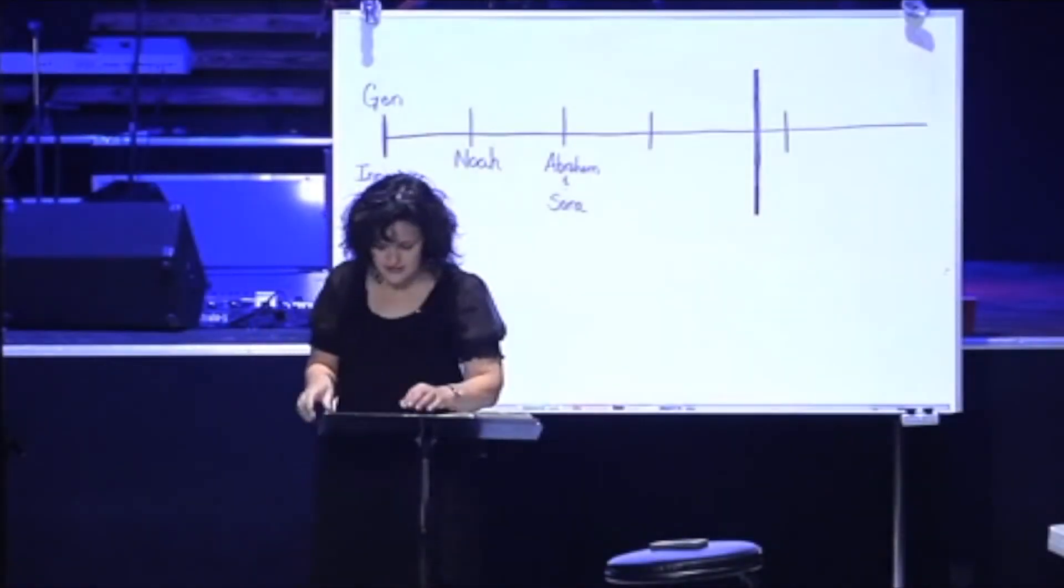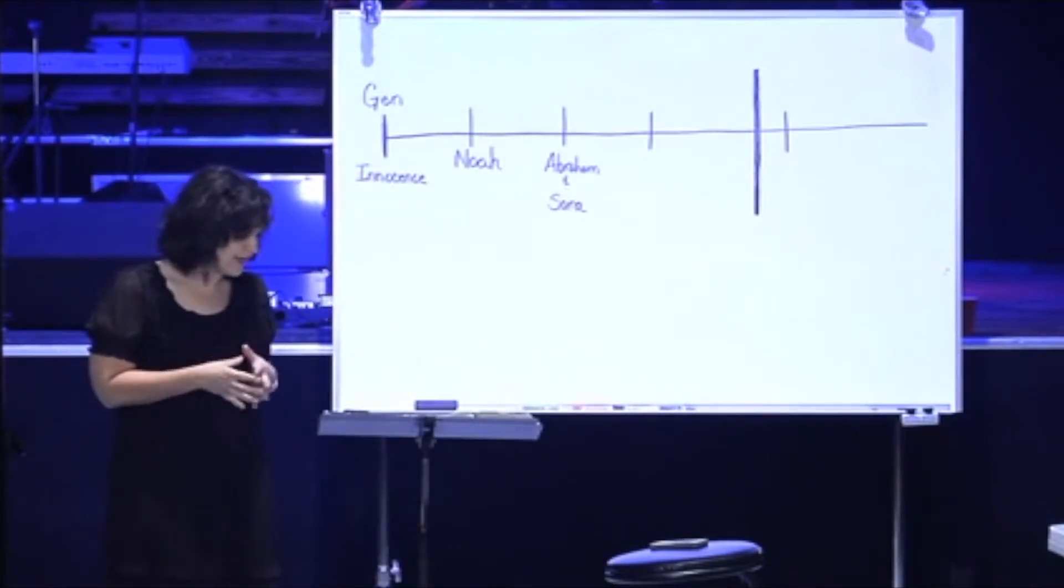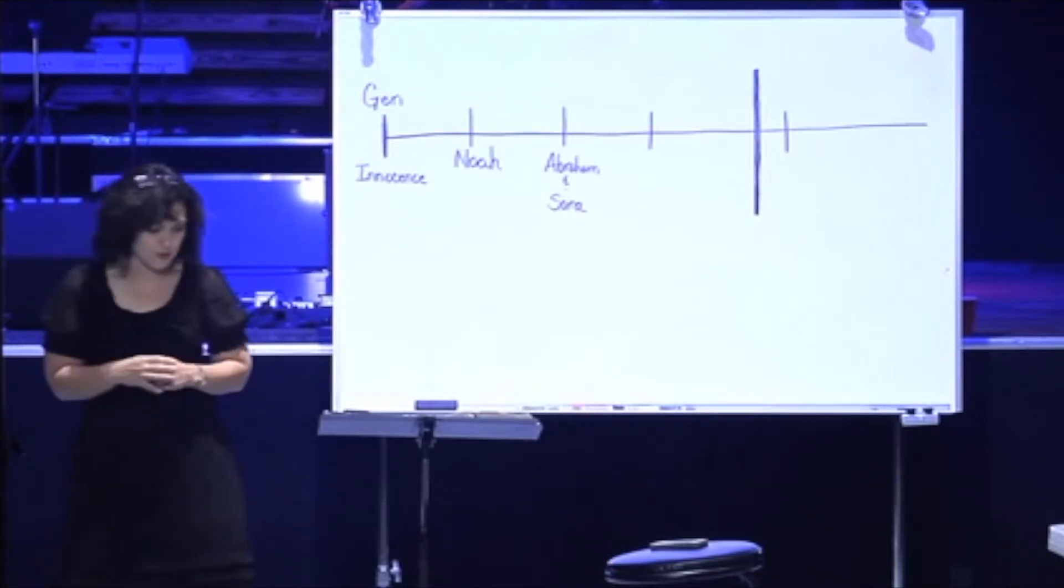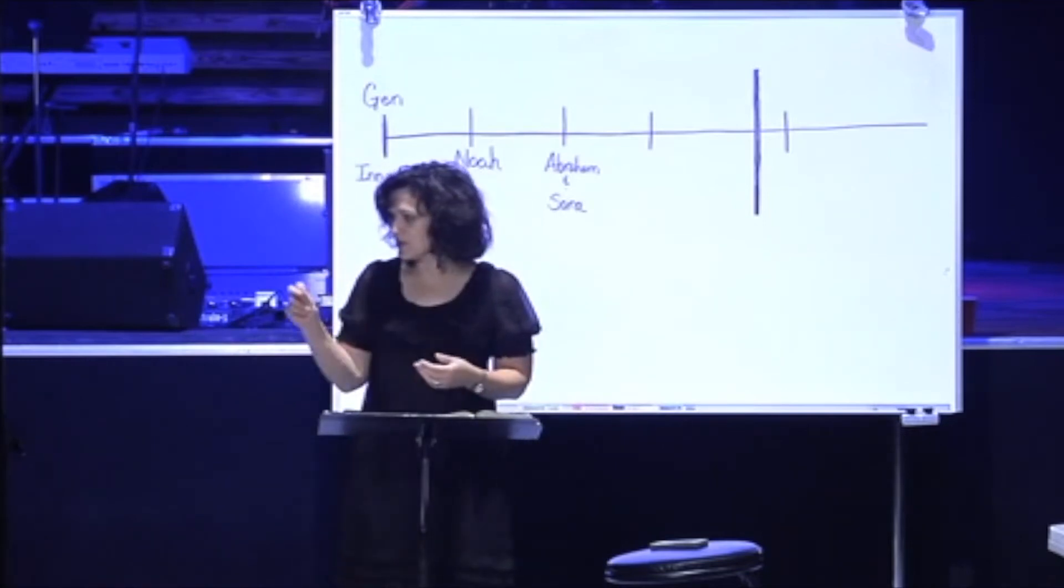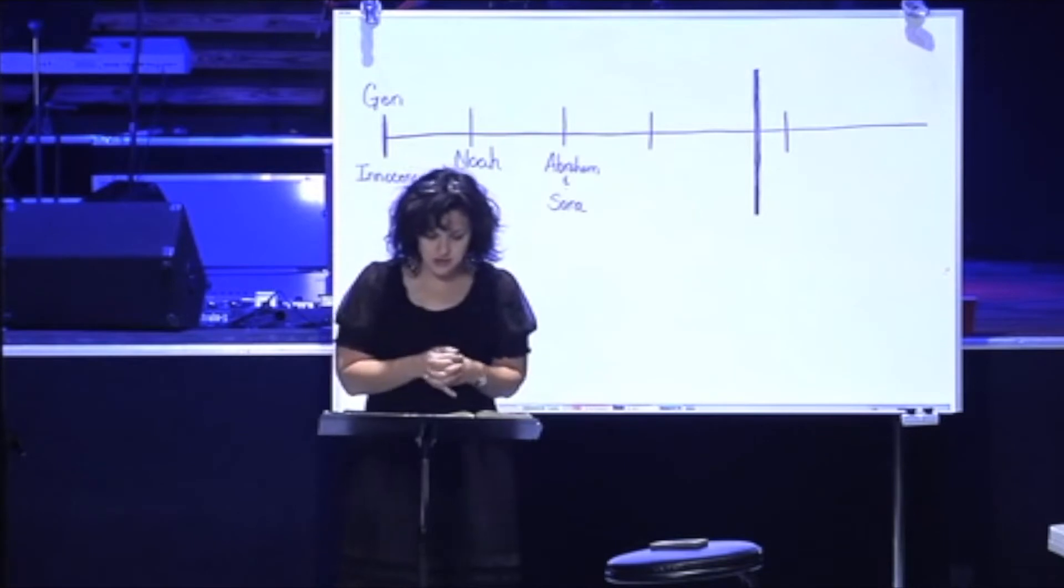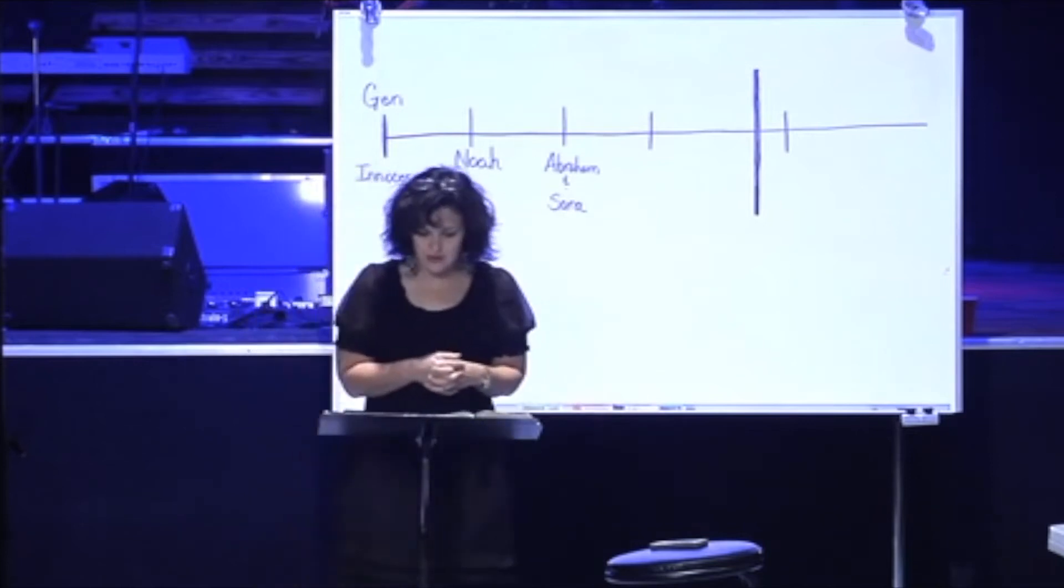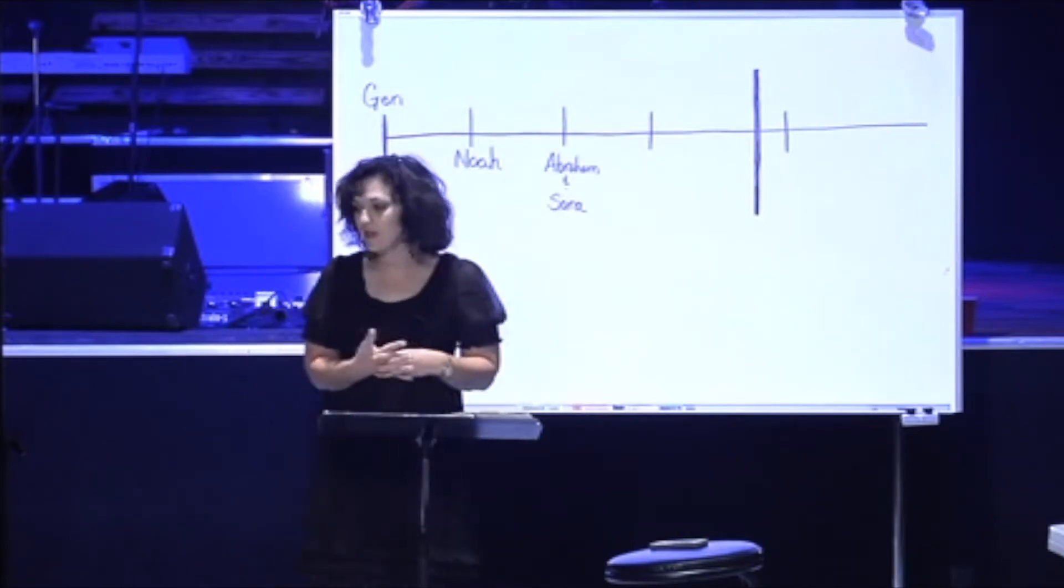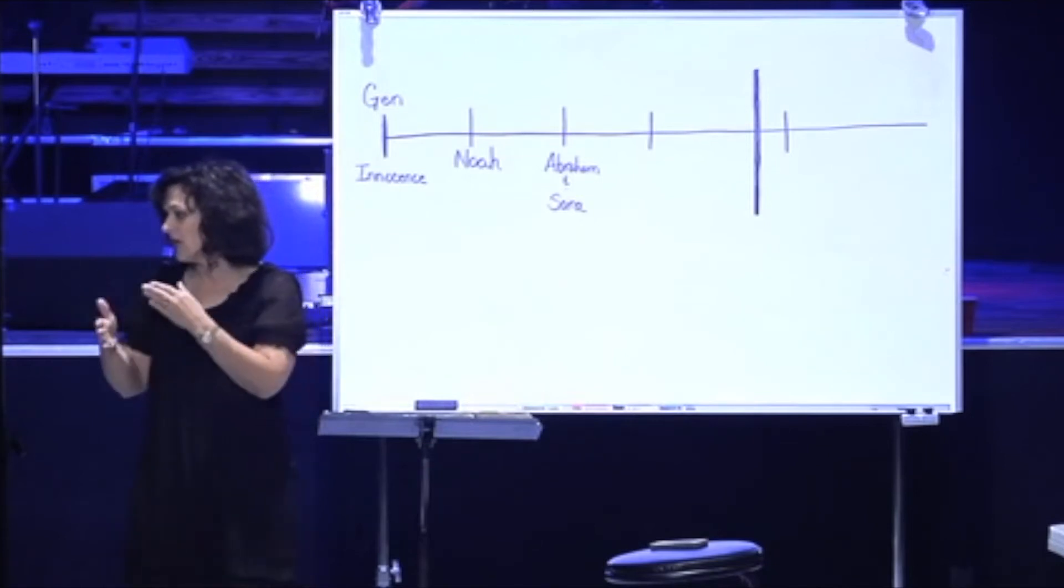All right, Galatians chapter 3, the first half. We started it last time we met, and we're going to work on that. We're going to look at what I would call appointments, how God has appointed things through time and worked through time. Before we start, remember the prayer request sheets. Remember to write down your prayer request and make sure it gets back to the back.